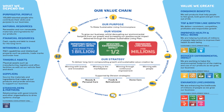As you can see from this diagram of our value chain, our purpose is to make sustainable living commonplace. Our vision is to grow our businesses while decoupling our environmental footprint from our growth and increasing our positive social impact, delivered through the Unilever Sustainable Living Plan by three items: first, improving health and well-being for more than one billion; second, reducing environmental impact by half; third, enhancing livelihoods for millions.